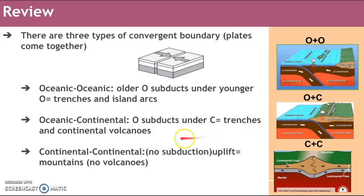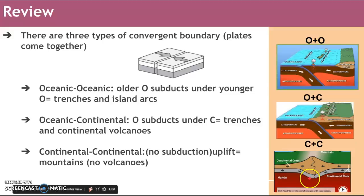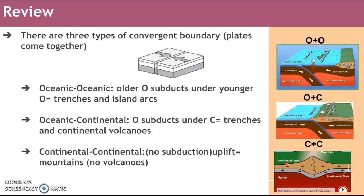And then finally, and this is the one we're going to look at closer today, is continental-continental uplift. There's no subduction here. When two continental crusts converge, they're not dense enough for either of them to sink — they're less dense than the mantle. So neither of them can get pushed under; they end up uplifting instead. Our example of that would be the Himalayas, and we get no volcanoes because there's no subduction in that area.